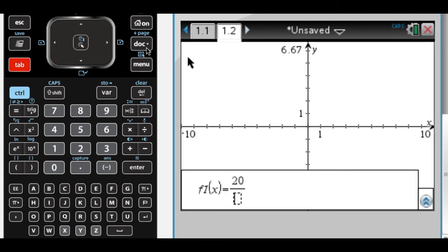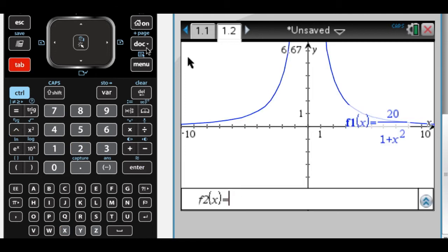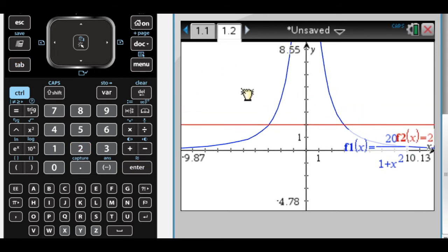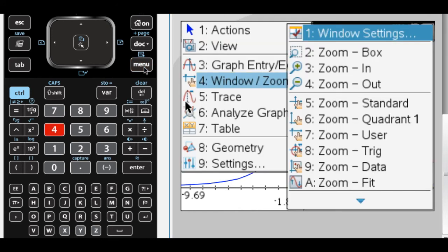So the first one is 20 over 1 plus x squared, and the second is y equals 2. So let's rearrange this so that we have a better view. So I'll drag that. Let's do this.